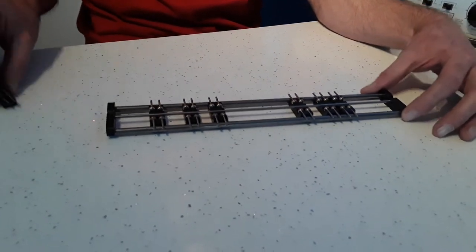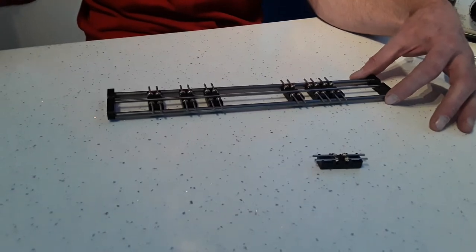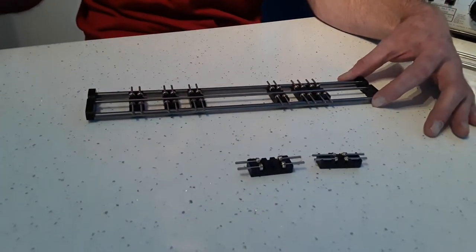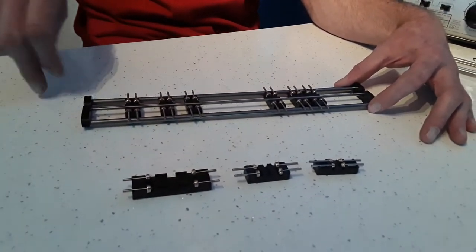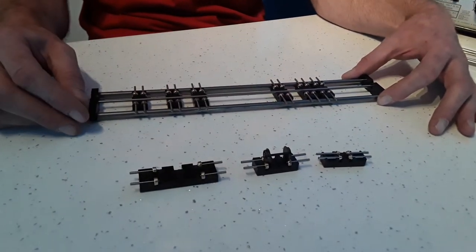Here you can see the individual roller brackets, small one for N gauge, double, larger O gauge and how the wheels rest on the roller brackets.